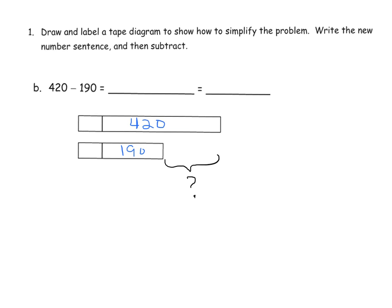But 190 is not exactly an easy number to subtract. So what we're going to do is we're going to make it a little bit easier by adding 10 to both tape diagrams here. And in doing so, I'm not changing the gap here. So our answer, the gap, is still going to be the same. But now the problem becomes 430 minus 200, which is a little bit easier to do compared to 420 minus 190. So 430 minus 200 gives us 230.